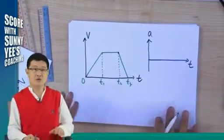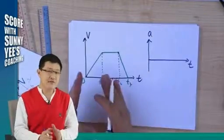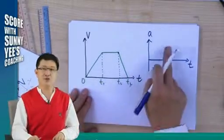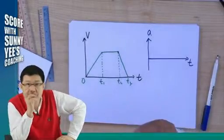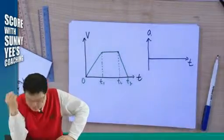You want to transfer the graph of this velocity time into acceleration time. Now, look very carefully. Always look at what? The gradient. What does the gradient represent?